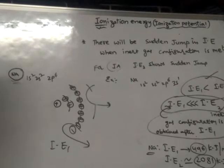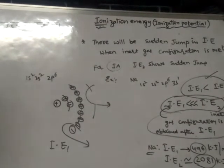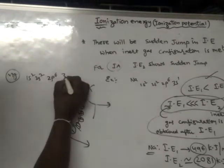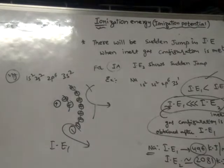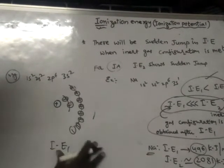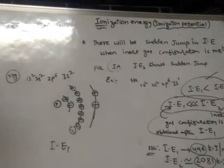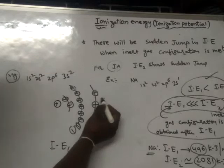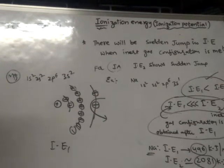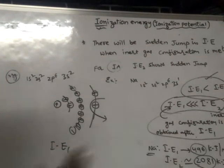Now let us take one more example — magnesium. If you see magnesium, its configuration is 3s2. That means in a magnesium atom there are two electrons in the outermost orbit. By spending the first ionization energy, I remove the last electron — the first electron from the outermost orbit of the atom.